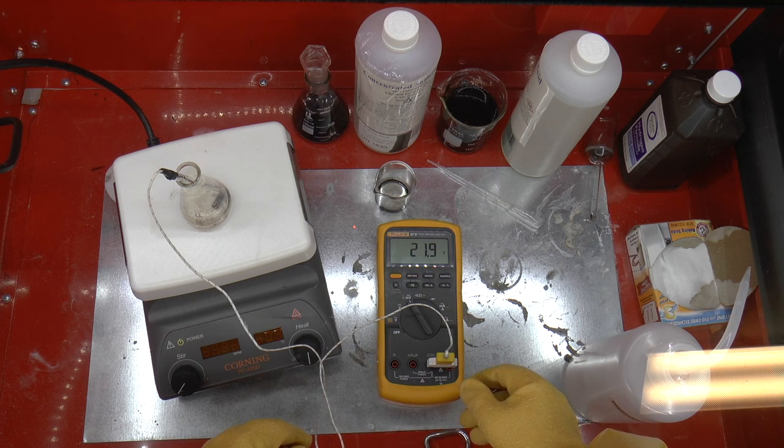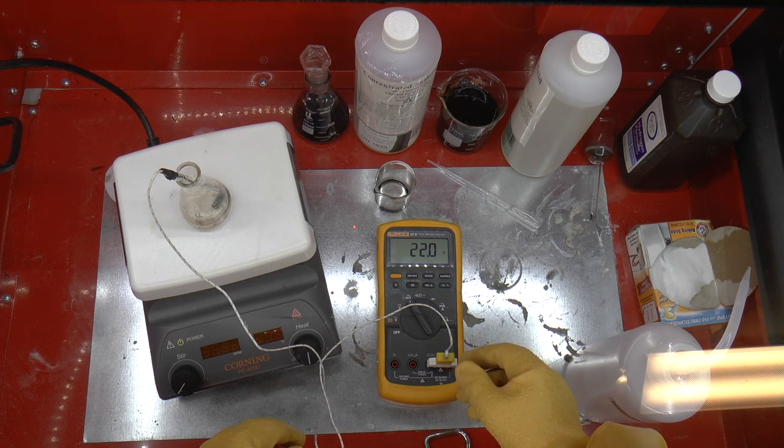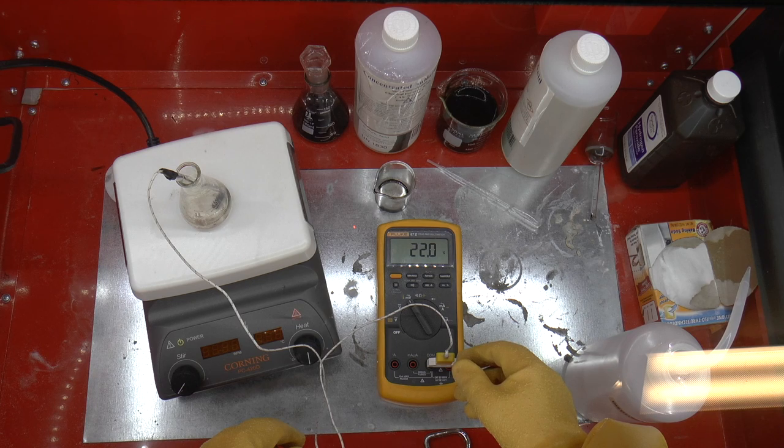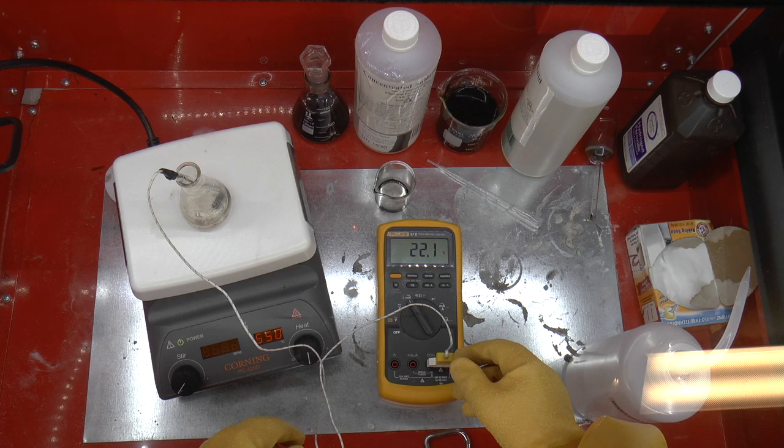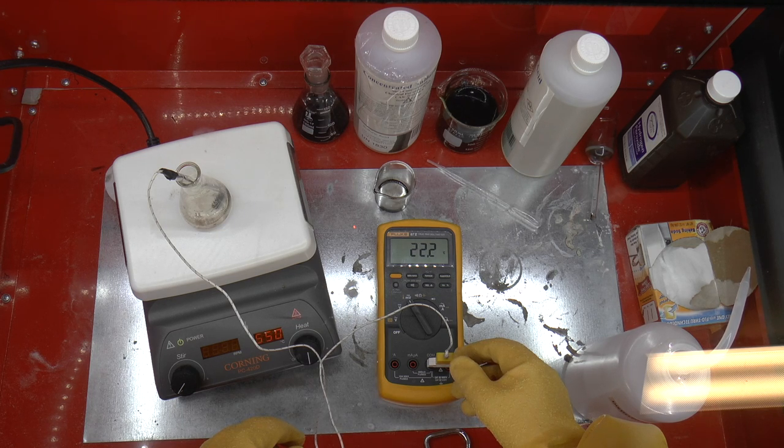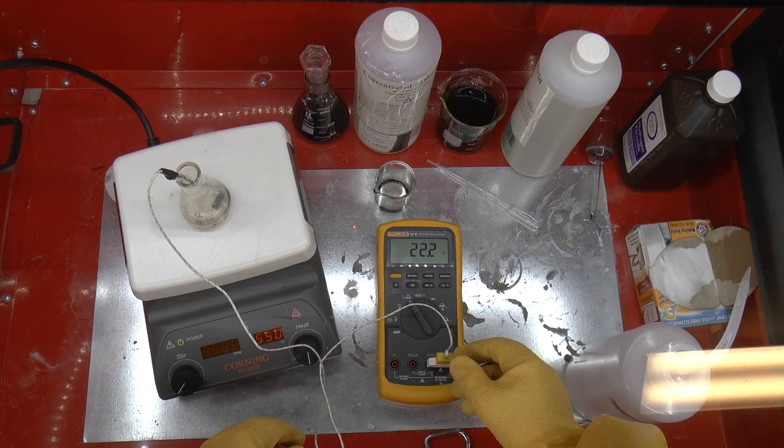200 Celsius is hot enough to essentially melt or actually oxidize or dehydrate the plastic resin that forms the plastic body of the chip. Since this can get pretty boring, we're just going to fast forward.